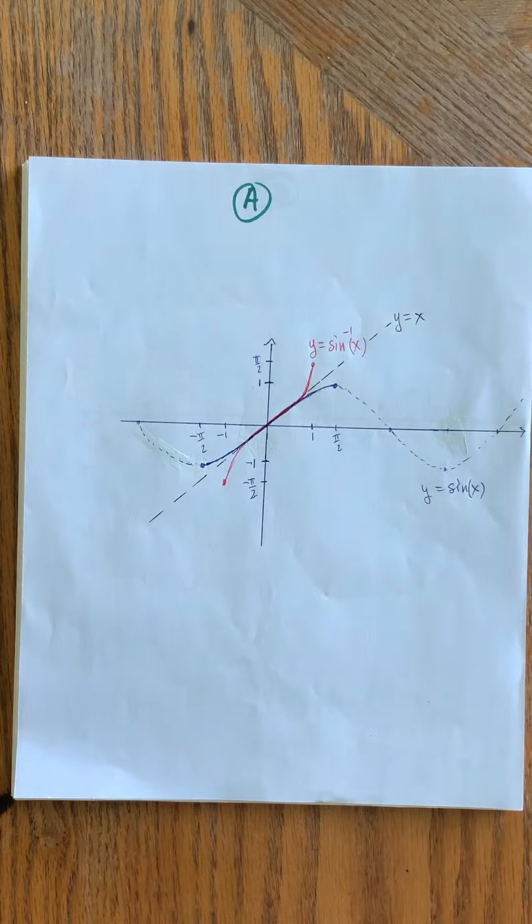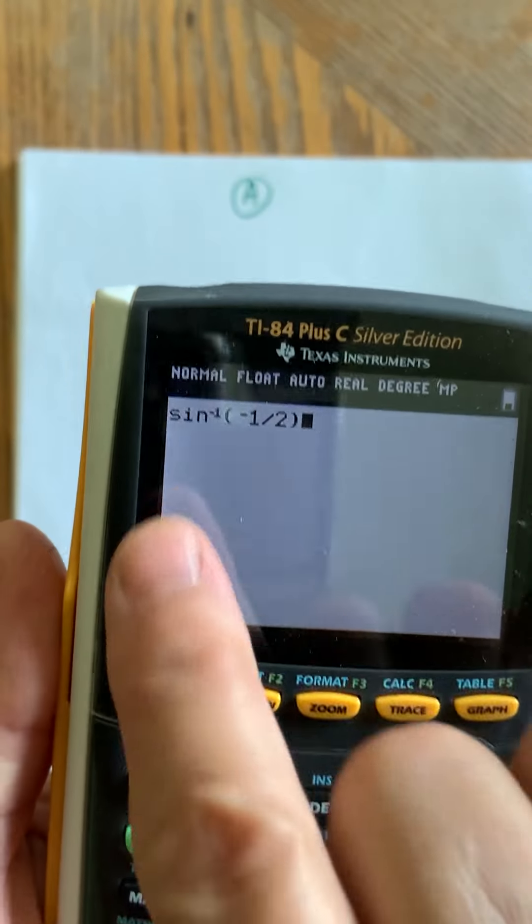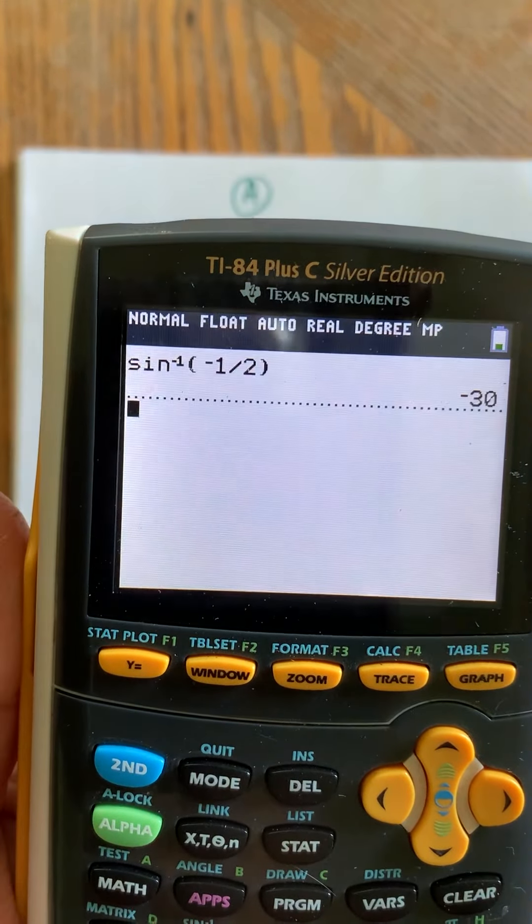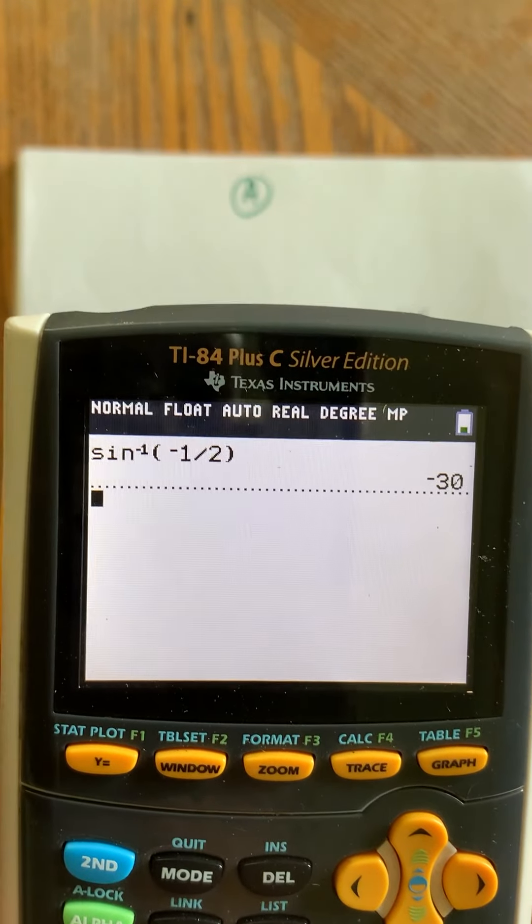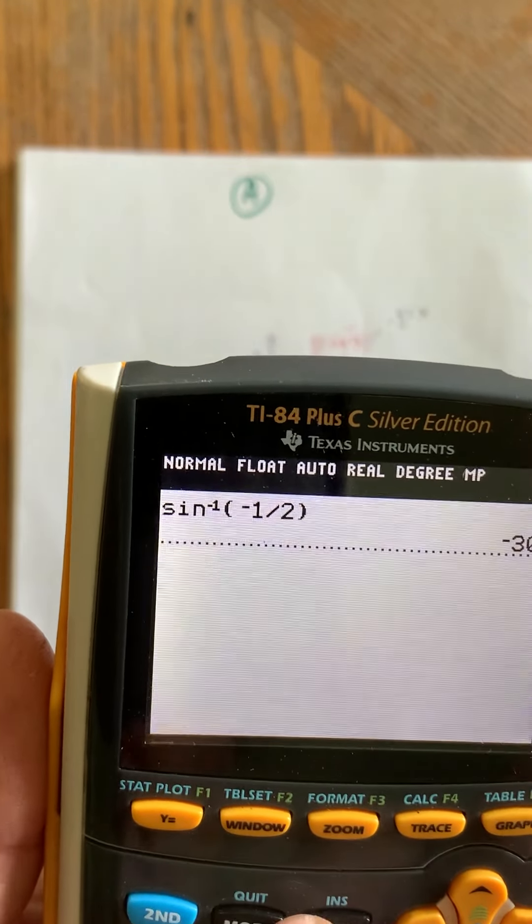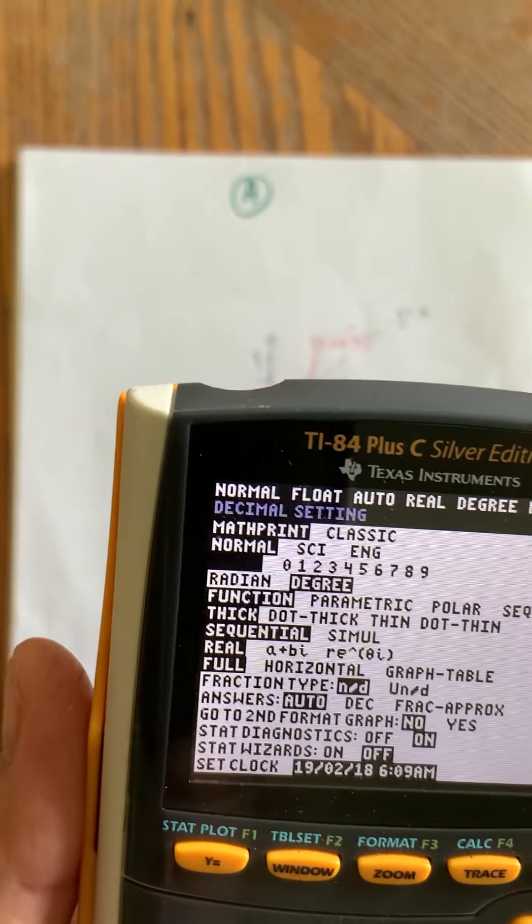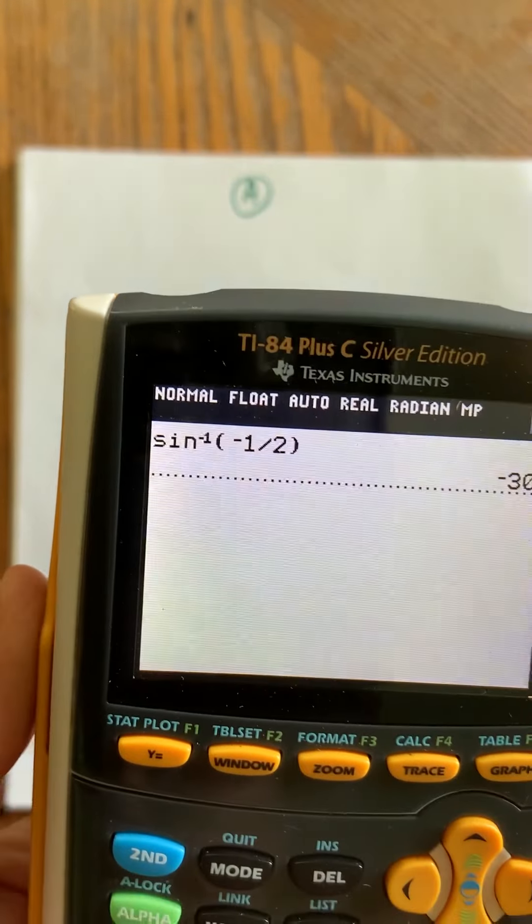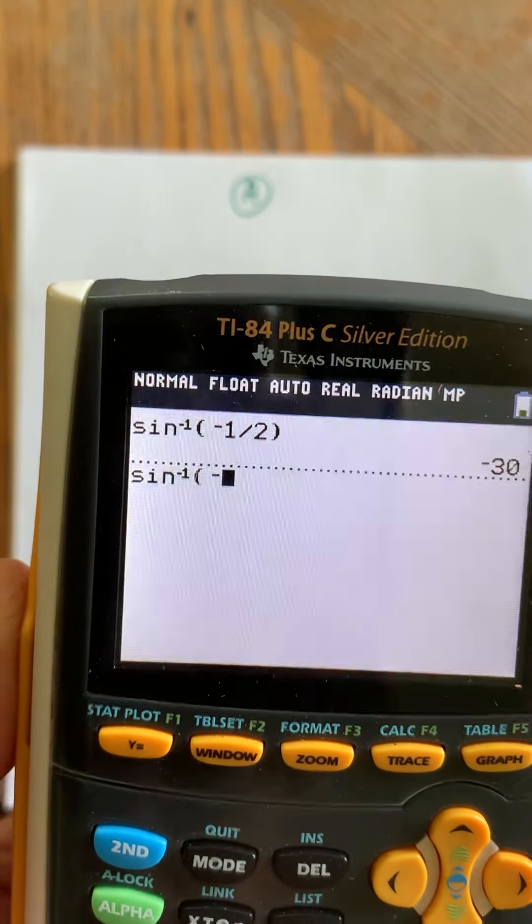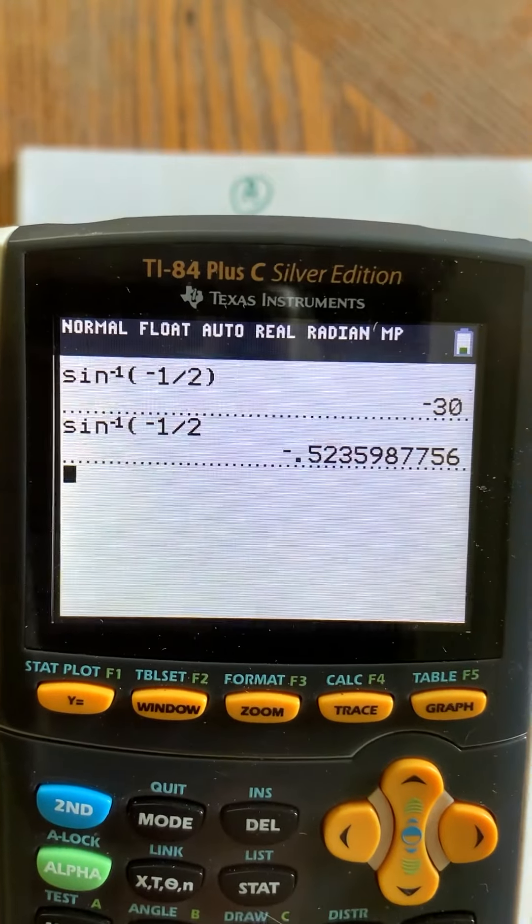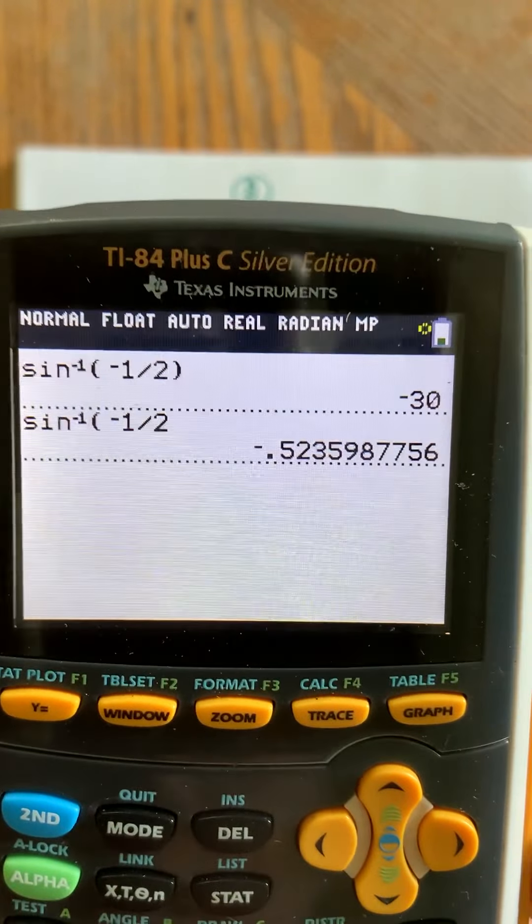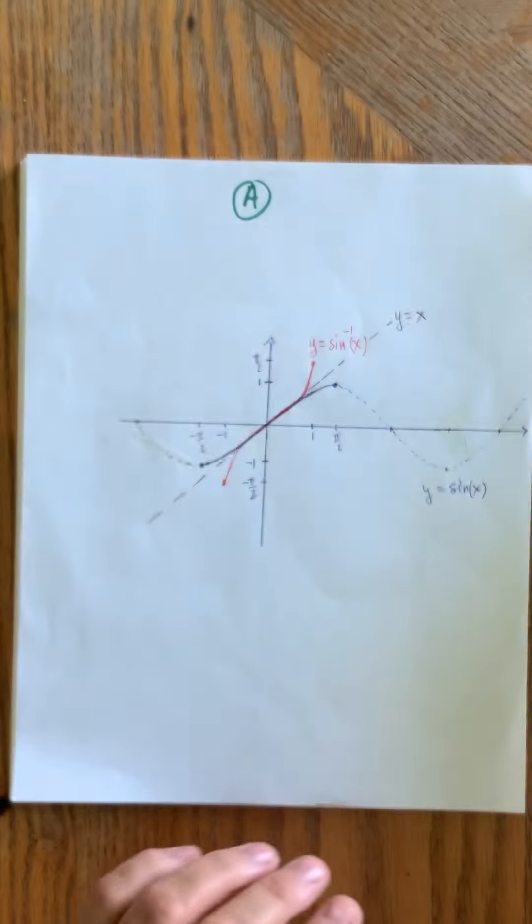And that's why in your calculator when you go to do inverse sine of let's say negative a half, and I happen to be in degree mode, you get negative 30, which you may find weird, why is it negative 30? If you were in radian mode and you were to ask the same question, inverse sine of negative 1 divided by 2, it'd be in radian mode, so that would be if I take π divided by 6 but it's negative.